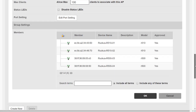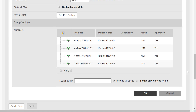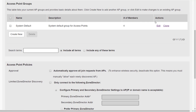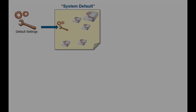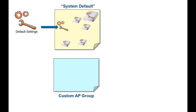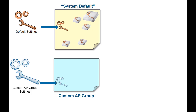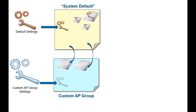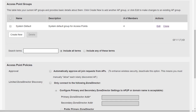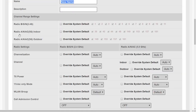Most settings are configurable, but is it a good idea to configure the default access point group? Personally, I think it's always a good idea to leave the system default groups as they are. The best approach is to create a custom group, define the settings you want it to have, select which access points to move from the default group, move them, and then those access points adopt the custom group's settings. Note that access points can only be a member of one group.